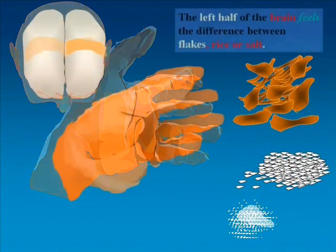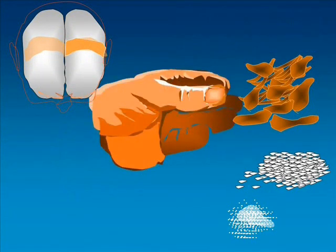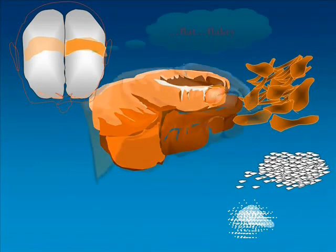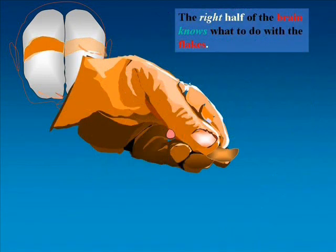The left half of the brain feels the difference between flakes, rice or salt. Flat, flaky. The right half of the brain knows what to do with the flakes.